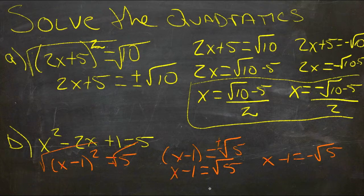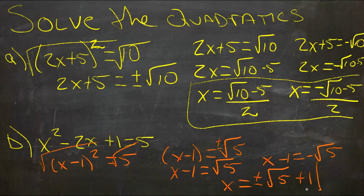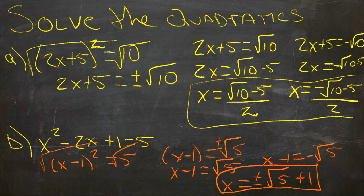Either way, we'll add 1, so we'll get x equals the positive or negative square root of 5 plus 1. And that's it.